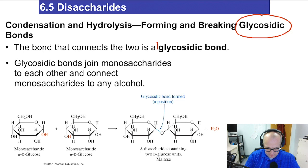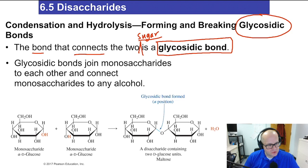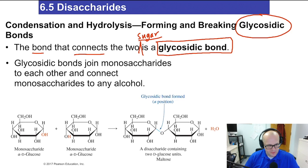A glycosidic bond is a bond that connects two sugar molecules together. For example, you could have two glucose molecules stuck together — they'd be connected by a glycosidic bond. You could have a glucose and a fructose combined with a glycosidic bond. You could have galactose and glucose — that would also be a glycosidic bond.